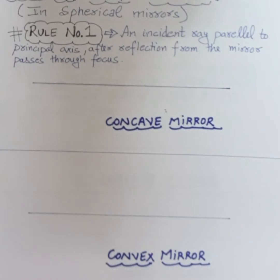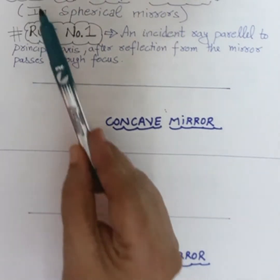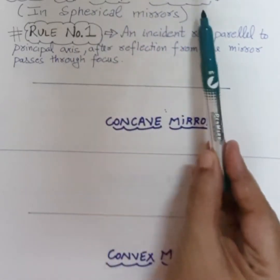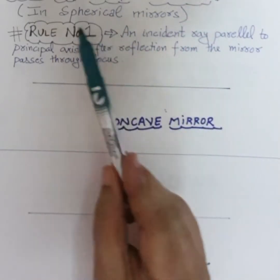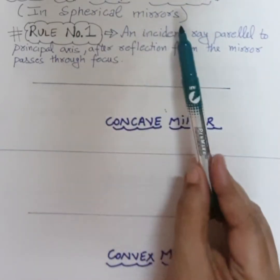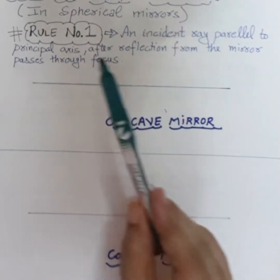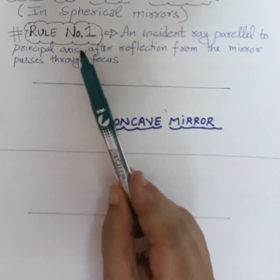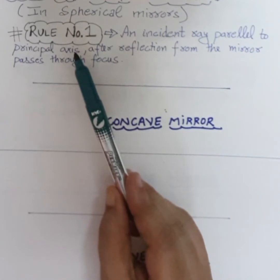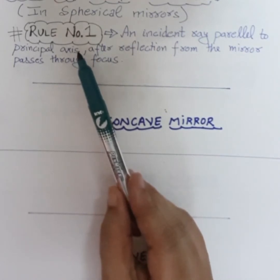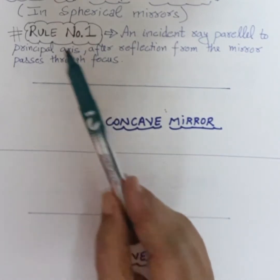Hello my dear students. Here is the video to understand the rules for image formation in spherical mirrors. There are a total of 3 rules which we need to know before starting with image formation.